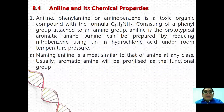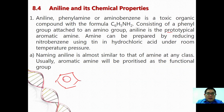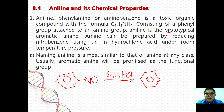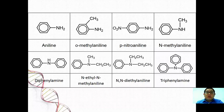Next, we are going to have a look at aniline and its chemical properties. Aniline, phenylamine, and aminobenzene is a toxic organic compound with the formula C6H5NH2, consisting of a phenyl group attached to the amino group. Aniline is the prototypical aromatic amine. Amine can be prepared by reducing nitrobenzene using tin and hydrochloric acid under room temperature and pressure. When nitrobenzene reacts with Sn in HCl, you are able to form aniline. Some naming examples include aniline, ortho-methylaniline, and para-nitroaniline.